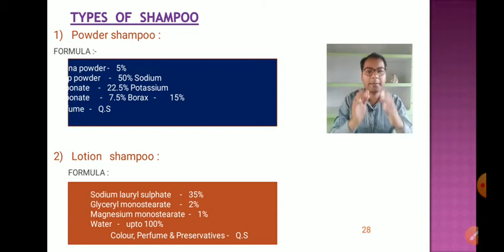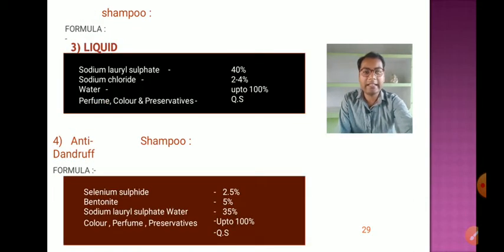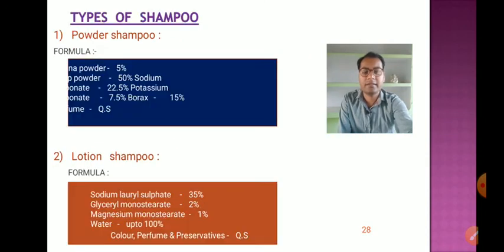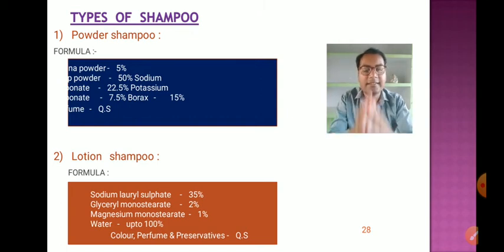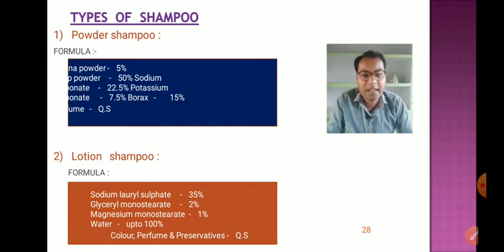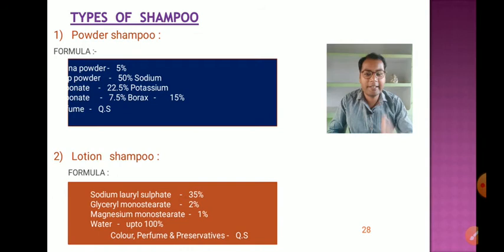Let us now discuss the types of shampoo. There are various types: powder shampoo, lotion shampoo, liquid shampoo, anti-dandruff shampoo, conditioning shampoo, etc. The formula for powder shampoo and lotion shampoo are provided. In lotion shampoo, the ingredients used are sodium lauryl sulfate, glyceryl monostearate, magnesium monostearate, water, color, perfume, and preservatives.